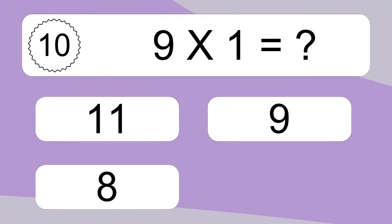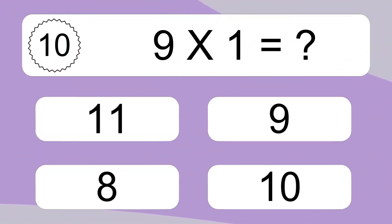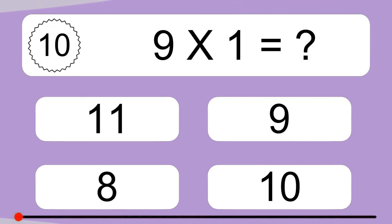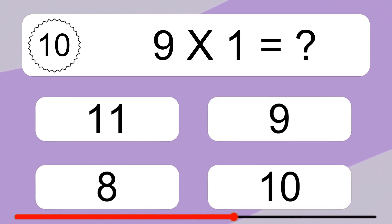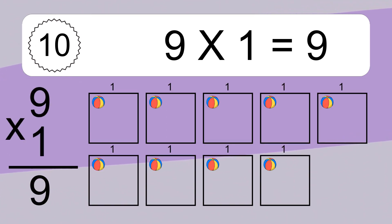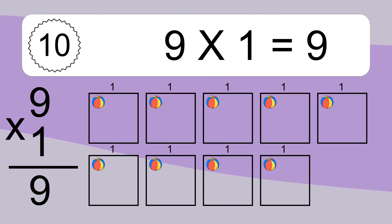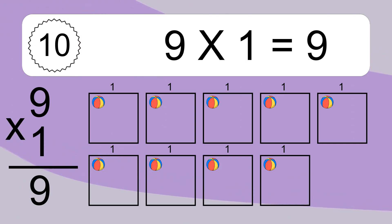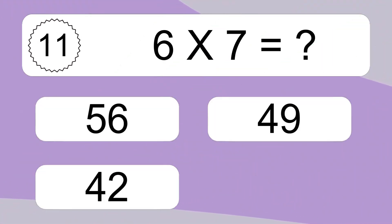9 times 1 equals what? 9 times 1 equals 9. We have 9 boxes, and each box has 1 colorful ball inside. If you count all the balls in all the boxes together, you will have 9 times 1 balls. This equals 9 balls.